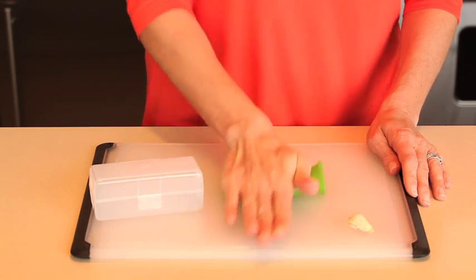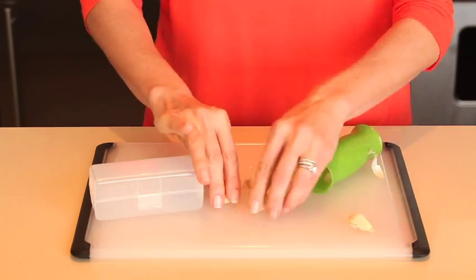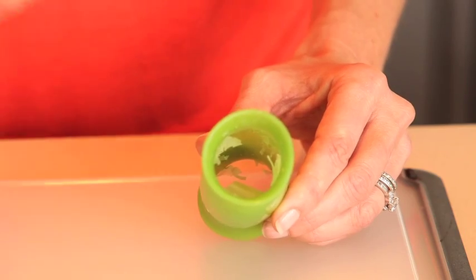The unique shape keeps the cloves inside while you peel. Garlic cloves come out peeled while the peel stays inside. Just rinse to remove the peel.